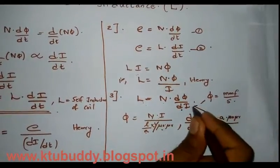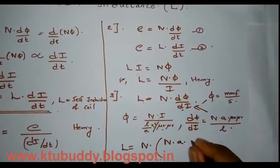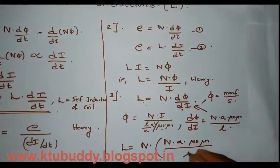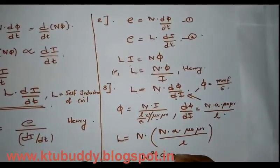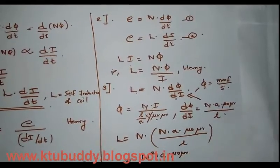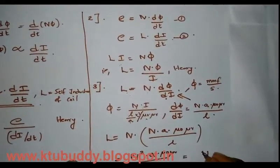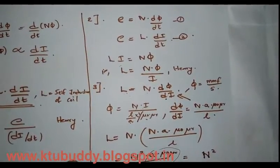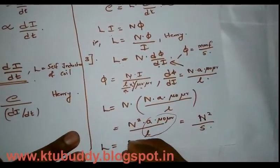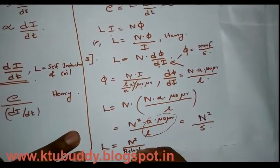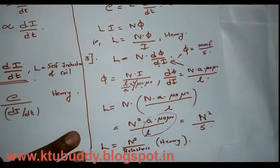Substituting dφ/di into the expression for L, we get self-inductance L = N × (N·A·μ₀·μᵣ / l) = N²·A·μ₀·μᵣ / l. This can also be represented as N² divided by reluctance S — that is, L = N²/S. The unit is henry. This is the third expression for self-inductance.